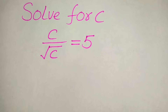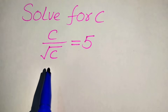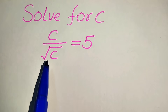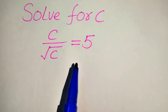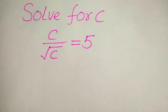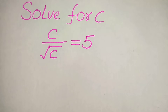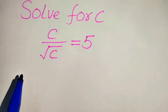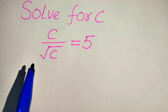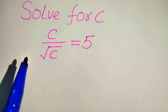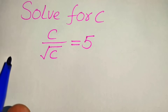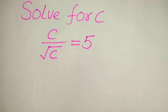Hello everyone. How to solve this problem: for the values of c, if we have c divided by square root of c equals 5, and we solve this problem for all the values of c. Here we find all the roots of this equation, and at the end we will check which of these roots are solutions and which are extraneous roots of the given equation.